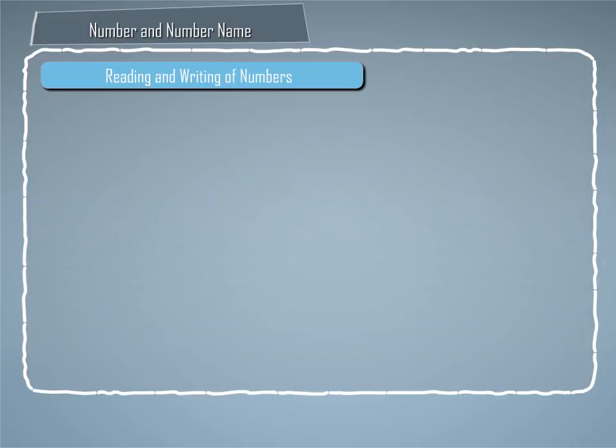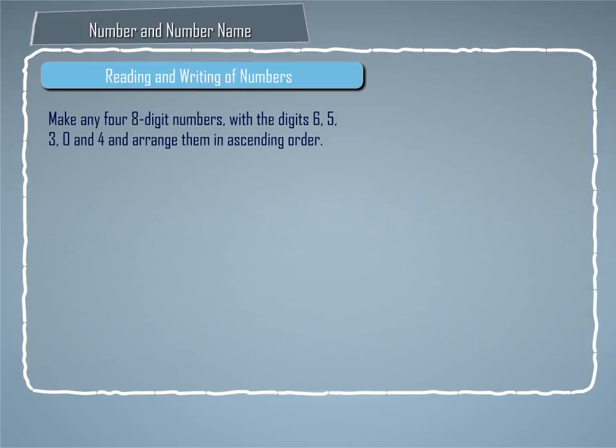Now let us understand how we can make numbers using some digits. For example, let us make any four eight-digit numbers with the digits 6, 5, 3, 0, and 4, and arrange them in ascending order.